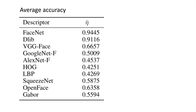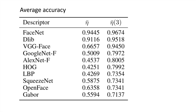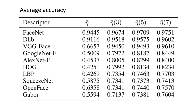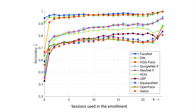These are the results. We evaluated 10 different descriptors and the accuracy is around 95% with FaceNet. If we want to increase the accuracy, we can include face images from the first three sessions in the enrollment database, bringing FaceNet up to around 97%. We can increase that further using more sessions. These graphics show the behavior when using more images in the sessions.